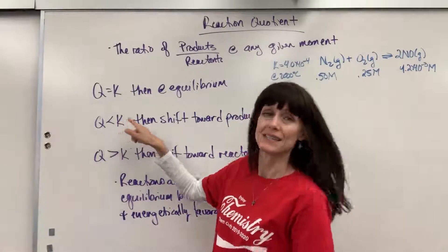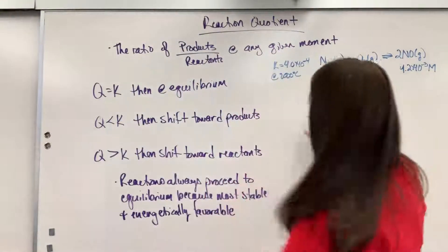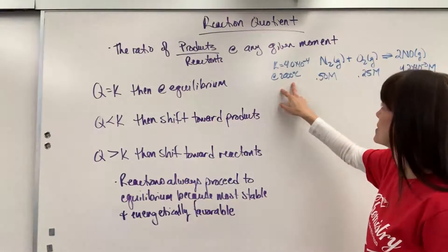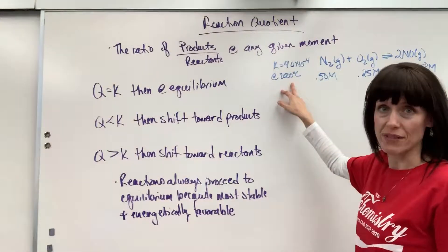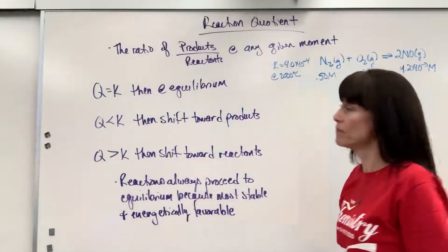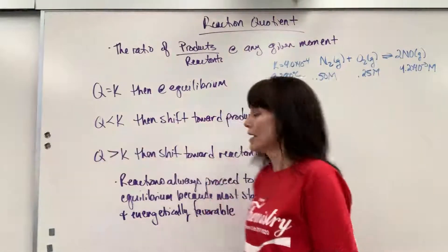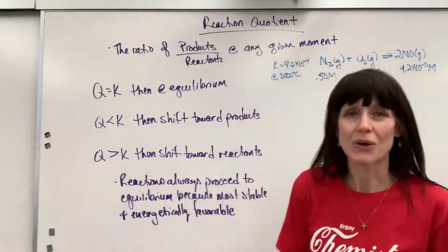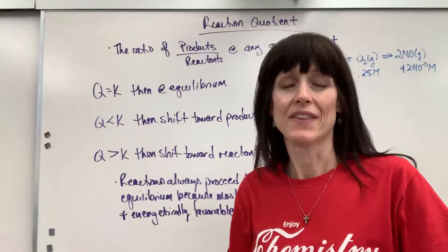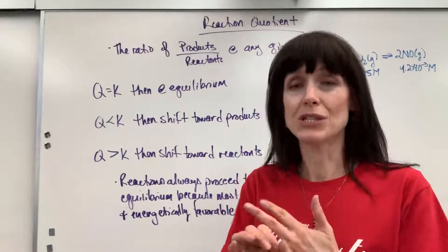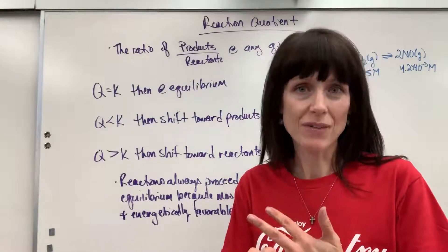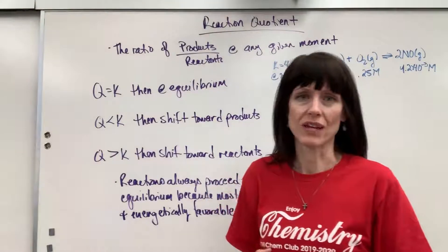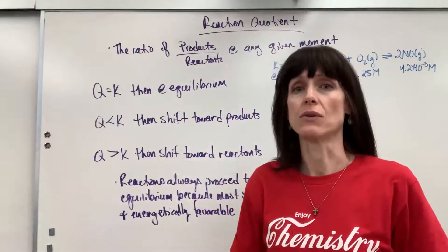Now if Q is less than K, so if I had a number smaller than 4 times 10 to the minus 4, maybe like 6.2 times 10 to the minus 5, that means I'm not at equilibrium. Now there's a driving rule right here. Reactions will always go to equilibrium because that's where they're number one, the most stable, and number two is energetically most favorable. That's everything in nature. Nature is the master of conserving energy. So everything goes to equilibrium.